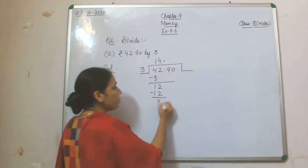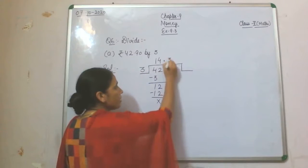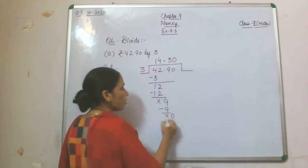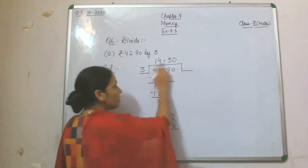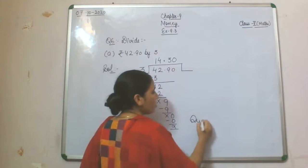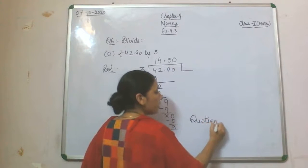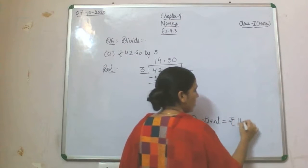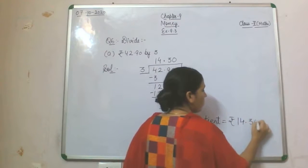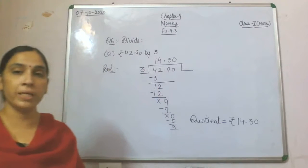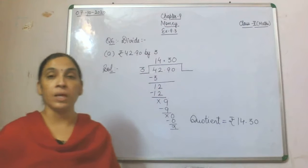Now 9 will get down. 3 threes are 9, nothing remaining. 0 will get down. 3 zeros are 0. So the quotient is 14.30, meaning rupees 14 and 30 paisa.